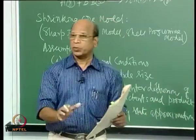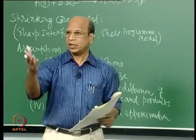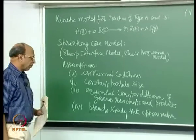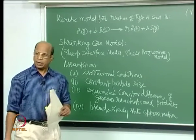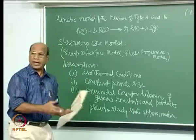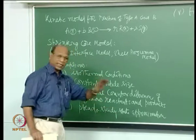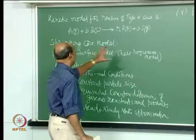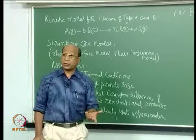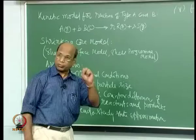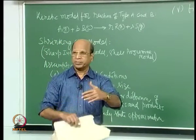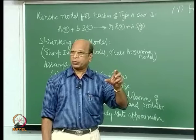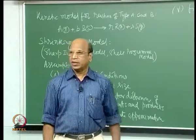A student asks: if A has one mole and product S has s moles, how can we assume equimolar diffusion? The instructor explains: that is exactly why it is an assumption — we are approximating. If the ratio is 1:2, the effect may not be large, but if it is 1:7 there is a significant effect. The reason for this simplification is to make the mathematics tractable and to understand the physics first.